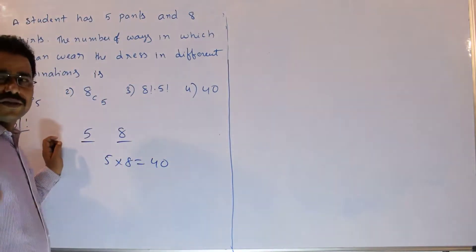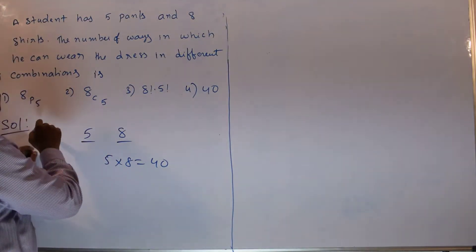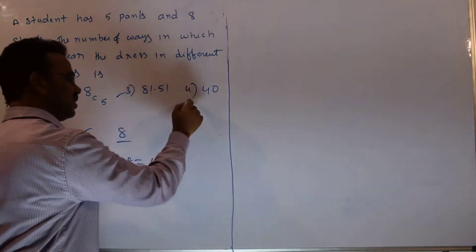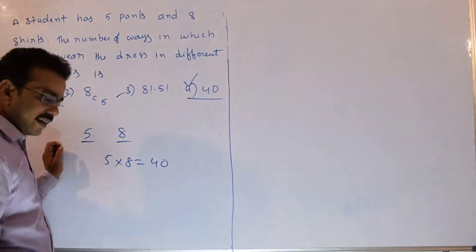What are the available options? Let's compare. First one, 8P5? No. Second one, 8C5? No. Third one, 8×5? No. Fourth one is 40. This is the correct option.